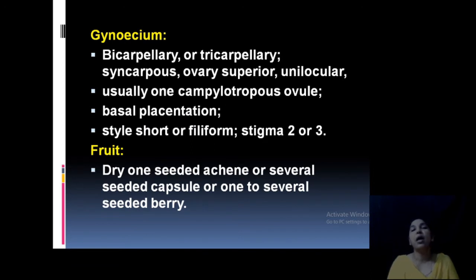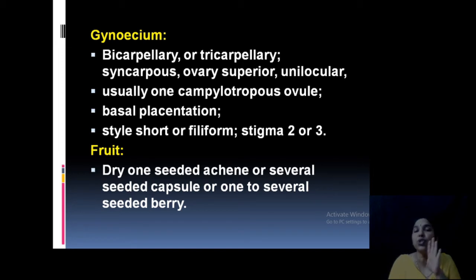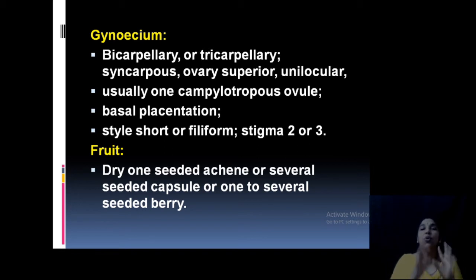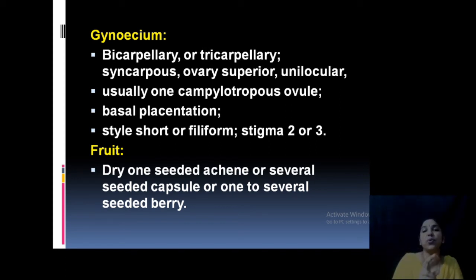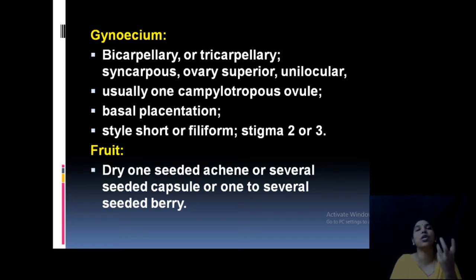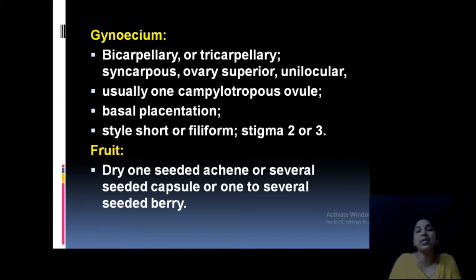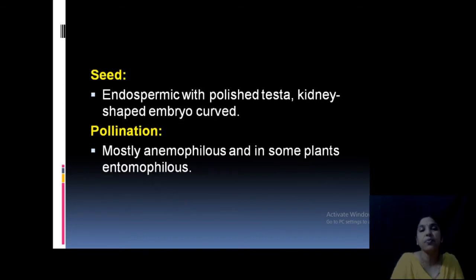The gynoecium is bicarpellary or tricarpellary. It is syncarpous, usually superior, and unilocular. There is one ovule, which is campylotropous, with basal placentation. The style is very short and filiform, with 2 to 3 stigmas. The fruit is a dry fruit — either a one-seeded achene or several-seeded capsule. Seeds are endospermic with a testa and a kidney-shaped embryo.